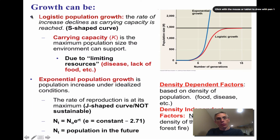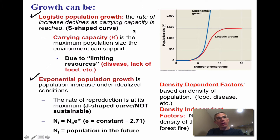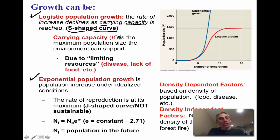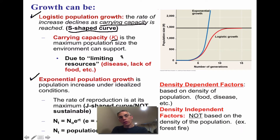Population growth can be identified in two ways. Logistic population growth is where the rate of increase declines as the population reaches carrying capacity (K), causing an S-shaped curve on a graph. Carrying capacity is the maximum population size that can be supported within the environment, due to various limiting resources.